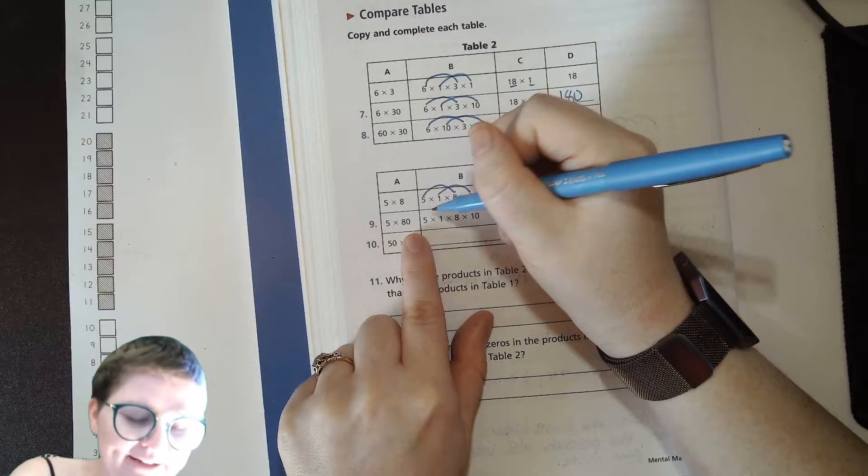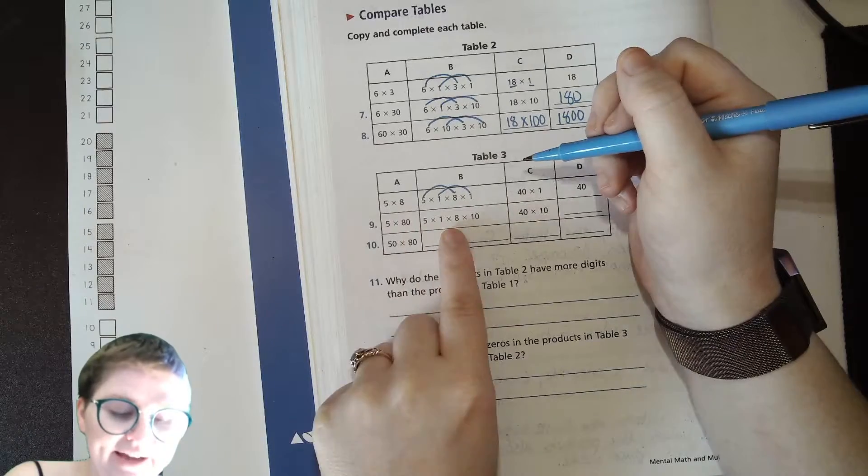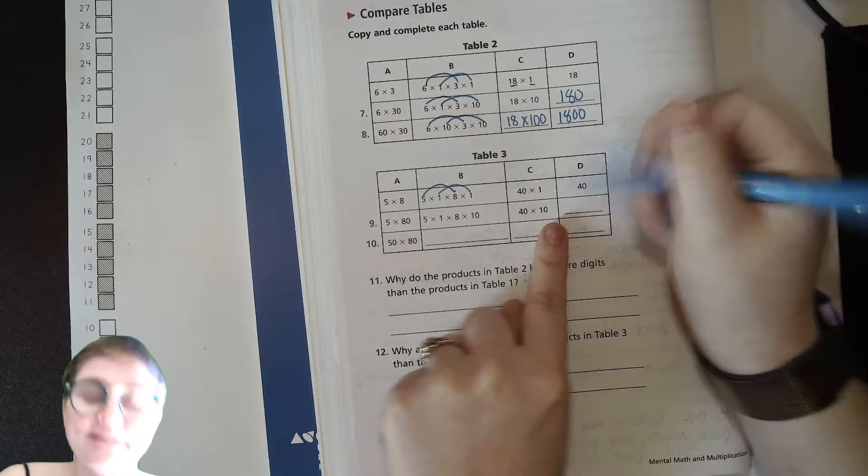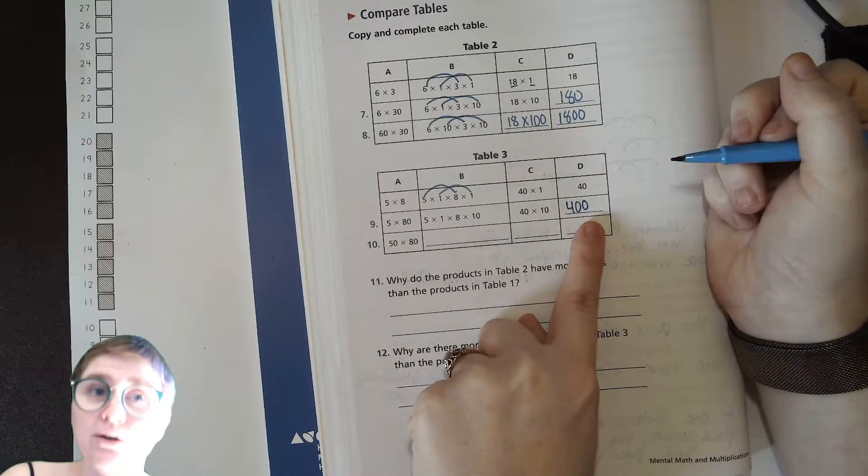Five times 80, so five times one is five. Eight times ten is the 80. Forty times ten is 40 tens, so four hundred.